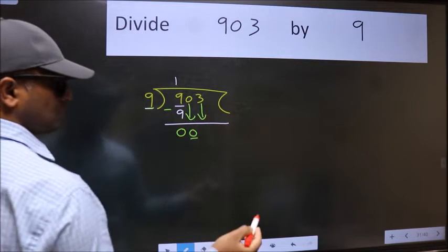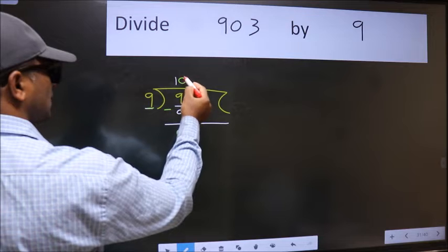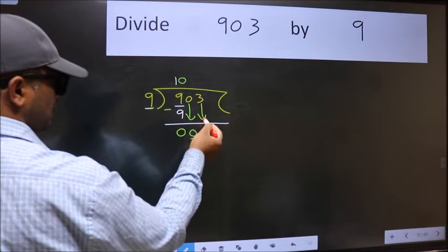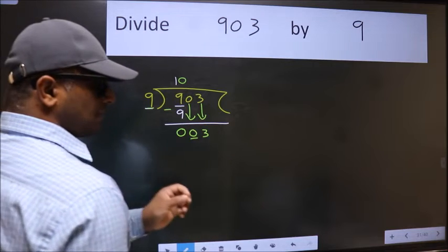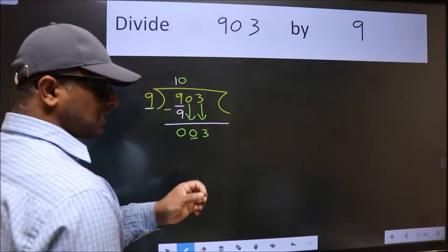And the rule to bring down second number is put 0 here. Then only we can bring this number down. After this step the mistake happens. And the mistake is this.